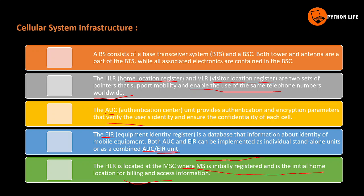To summarize: HLR is the home location register — if we have a SIM in India, we have an HLR there. VLR is the visitor location register — in countries like America and Canada, there is a VLR register enabling roaming communication. AUC and EIR are databases; EIR stores equipment identity data while AUC handles authentication for incoming and outgoing calls. HLR is stored in the MSC for billing and access information.